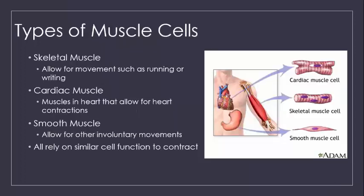There are three main types of muscle found in the body. Skeletal muscle is the tissue that we think about most often, as this is the tissue that allows us to perform voluntary motions, such as taking notes or running.